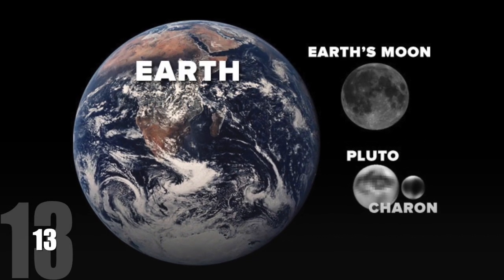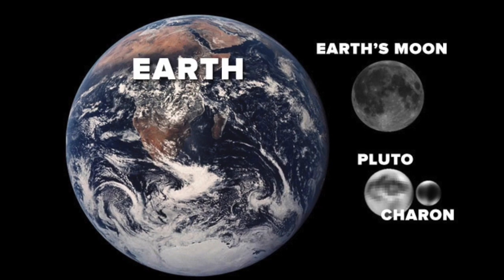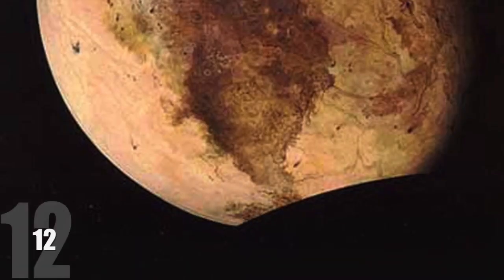Pluto is the smallest dwarf planet in the solar system, smaller than Earth's moon and half the width of Jupiter's moon Ganymede. 12.